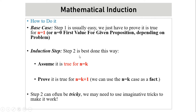In the induction step — step two — the best approach is: first we assume that the statement is true for n equal to k, and then we try to prove that it is true for n equal to k plus one. In that case, you will mostly go for solving LHS equal to RHS, and conclude LHS equal to RHS for n equal to k plus one. This is kind of tricky, and we may need to use imaginative tricks to make it work.